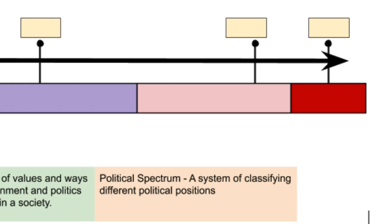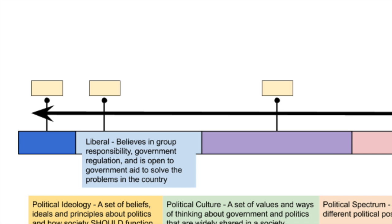Every person can receive a political spectrum score, which is really just a system of classifying different political positions — a range of where people fall in order to determine how people think in similar or different ways. The first position we're going to look at is called a liberal, shown in the light blue box. This is a person who believes in group responsibility, government regulation, and is open to government aid to solve problems in the country. For example, if people are poor and hungry, a liberal would believe that the government has a duty and a responsibility to help those people prop themselves up.